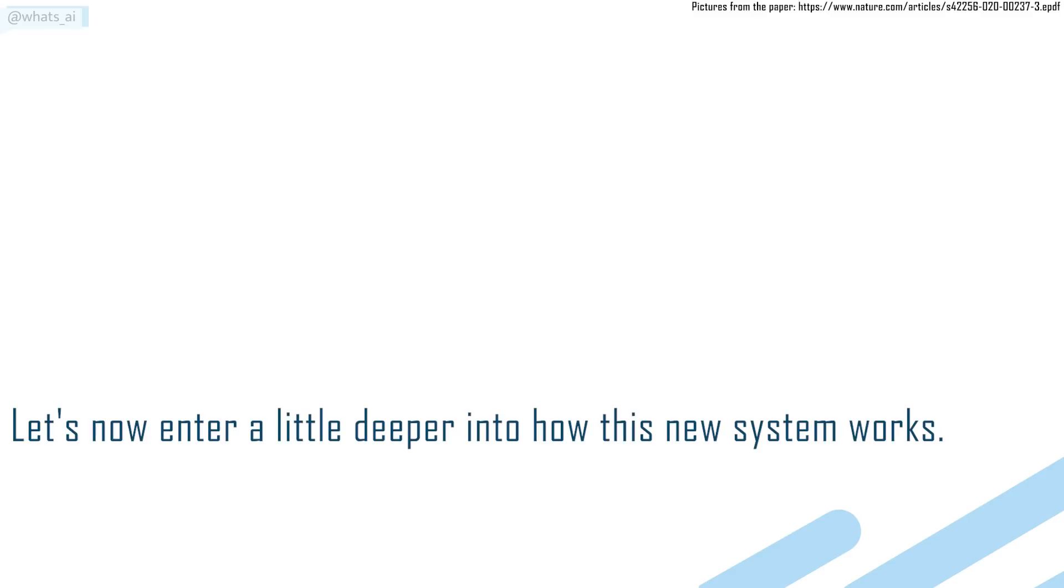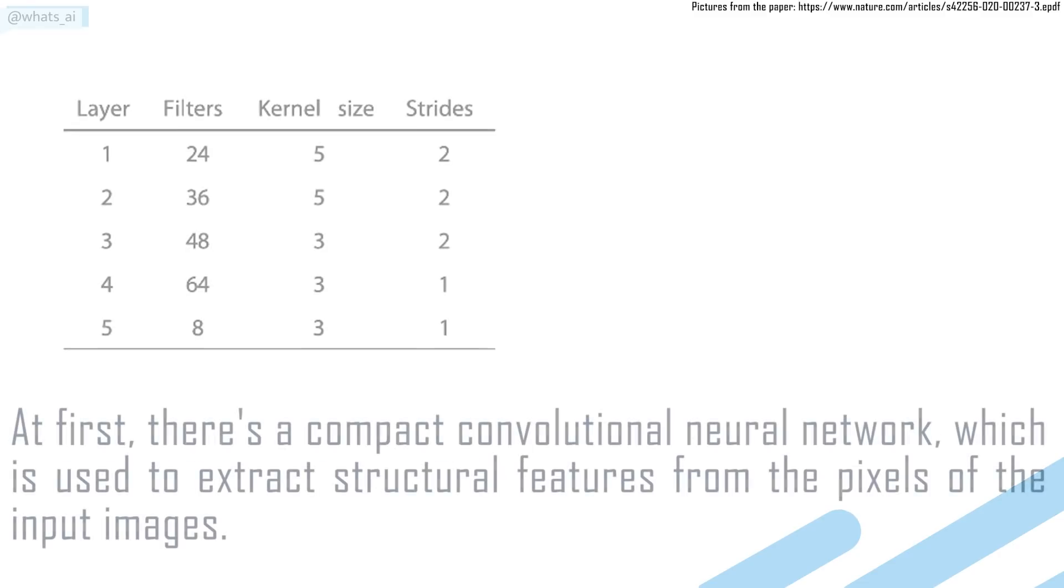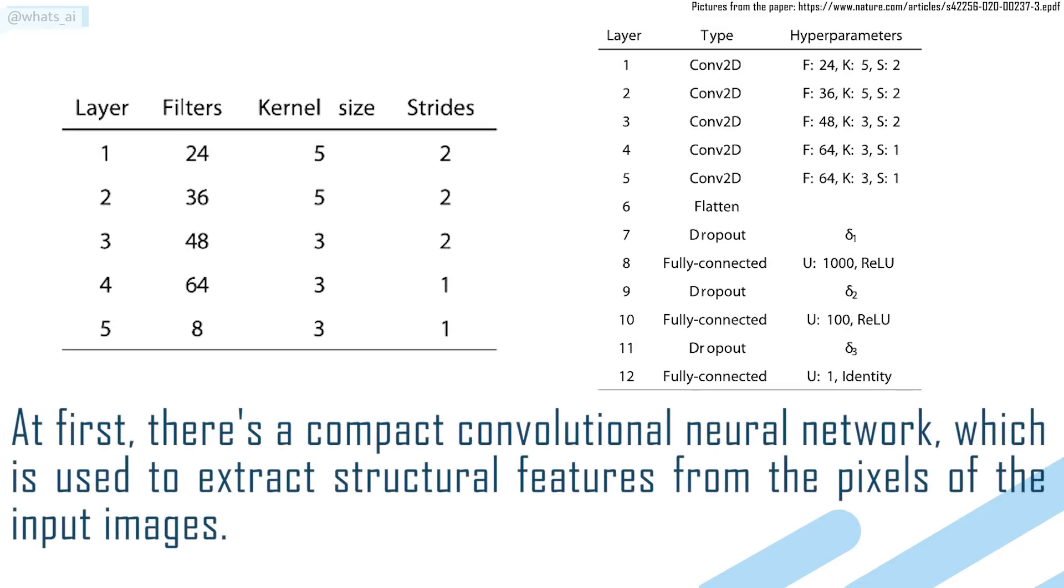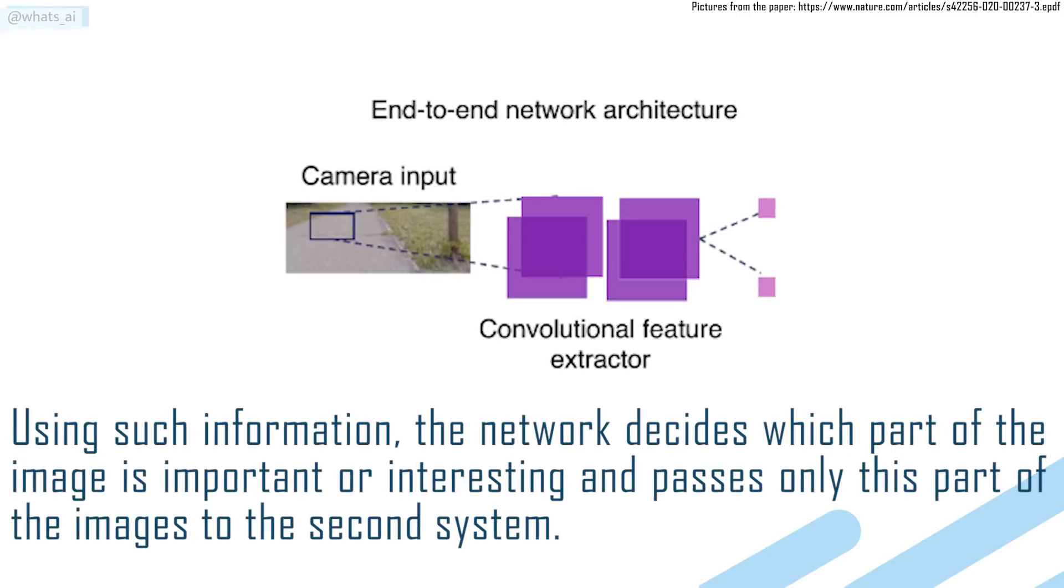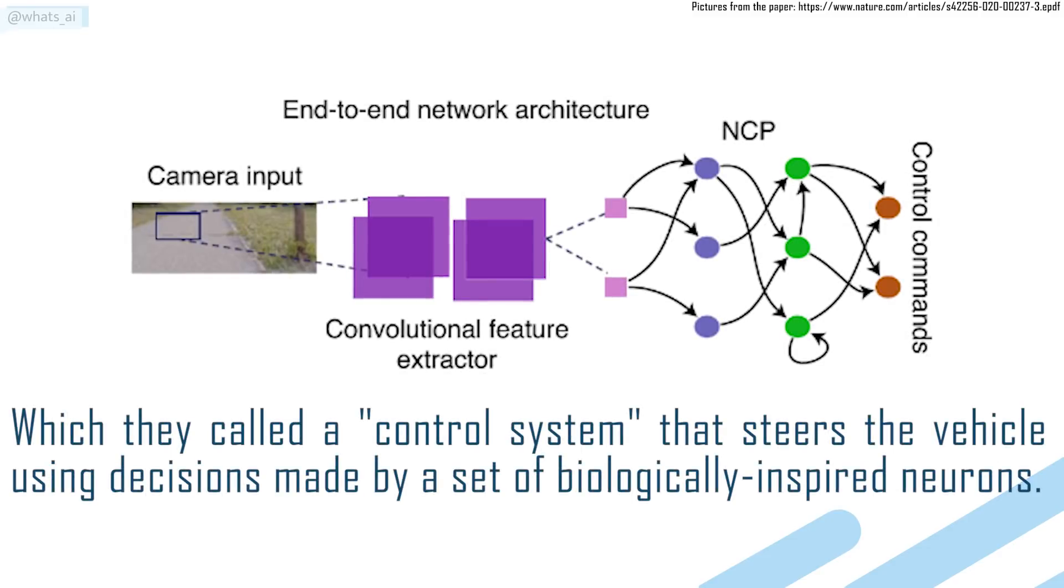Let's now enter a little deeper into how this new system works. It basically consists of two parts. At first, there's a compact convolution neural network, which is used to extract structural features from the pixels of the input images. Using such information, the network decides which part of the image is important or interesting and passes only this part of the images to the second system, which they call a control system.